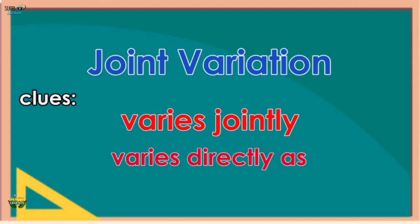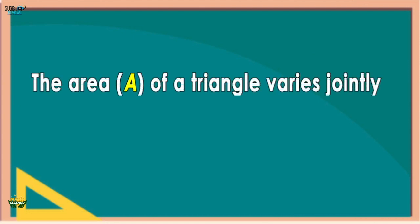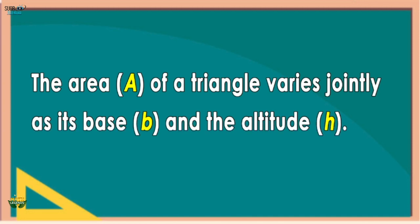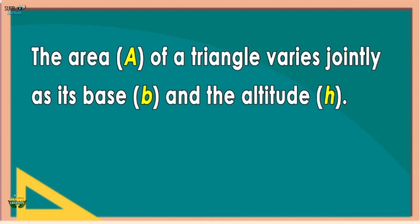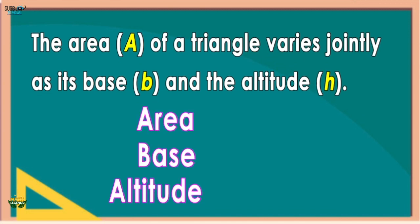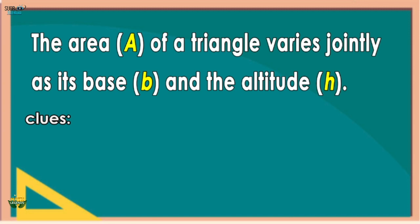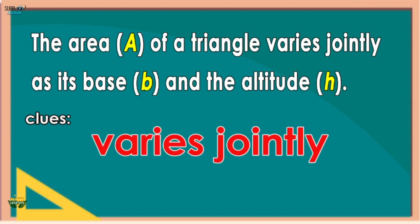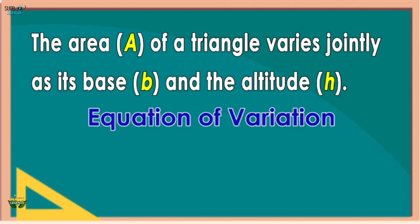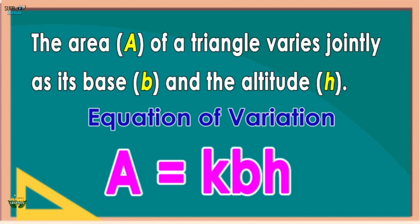Example: The area A of a triangle varies jointly as its base b and altitude h. The quantities involved are area, base, and altitude. A represents area, b represents base, and h represents altitude. The clue is 'varies jointly.' The equation of variation is A = kbh, where k is the constant of variation.